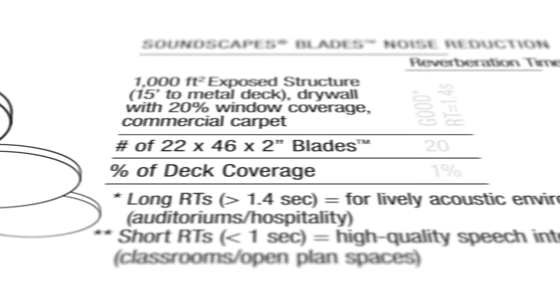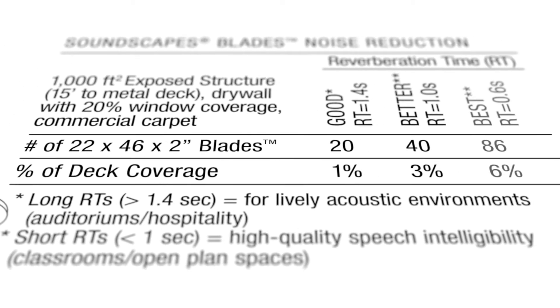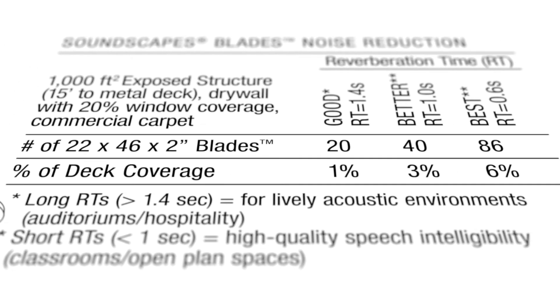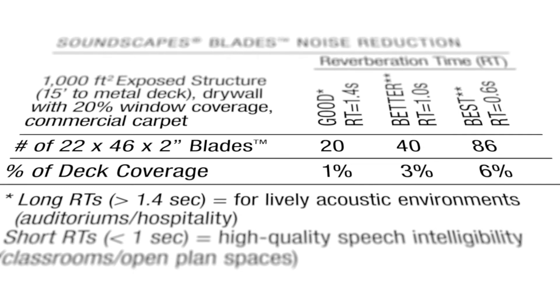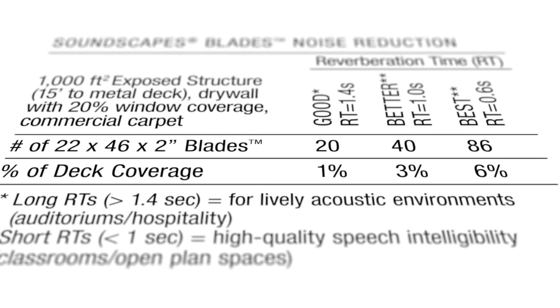To make it easier for you, we've calculated the sound absorption per square foot for baffles, blades, canopies, and clouds, and recommended good, better, and best options for your spaces. So you can weigh your options from dozens of solutions throughout the Armstrong ceiling and walls portfolio. Now you have design freedom and solid acoustic design to bring down the noise.